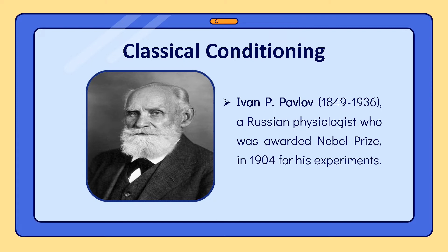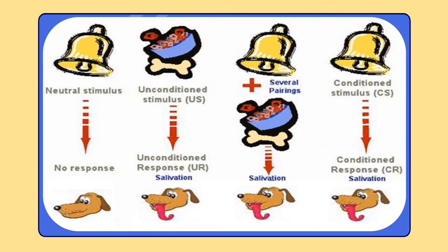Classical conditioning got its name from the early classical experiments of Ivan Pavlov, a Russian physiologist awarded the Nobel Prize in 1904. Pavlov designed an apparatus to measure the quantity of saliva produced in response to food. At the beginning of his experiment, Pavlov noted that no saliva flowed when he rang a bell. He then trained the dog by sounding the bell and shortly afterwards presenting food. After the bell had been paired with food a few times, he tested the effects by measuring saliva produced to the bell alone.